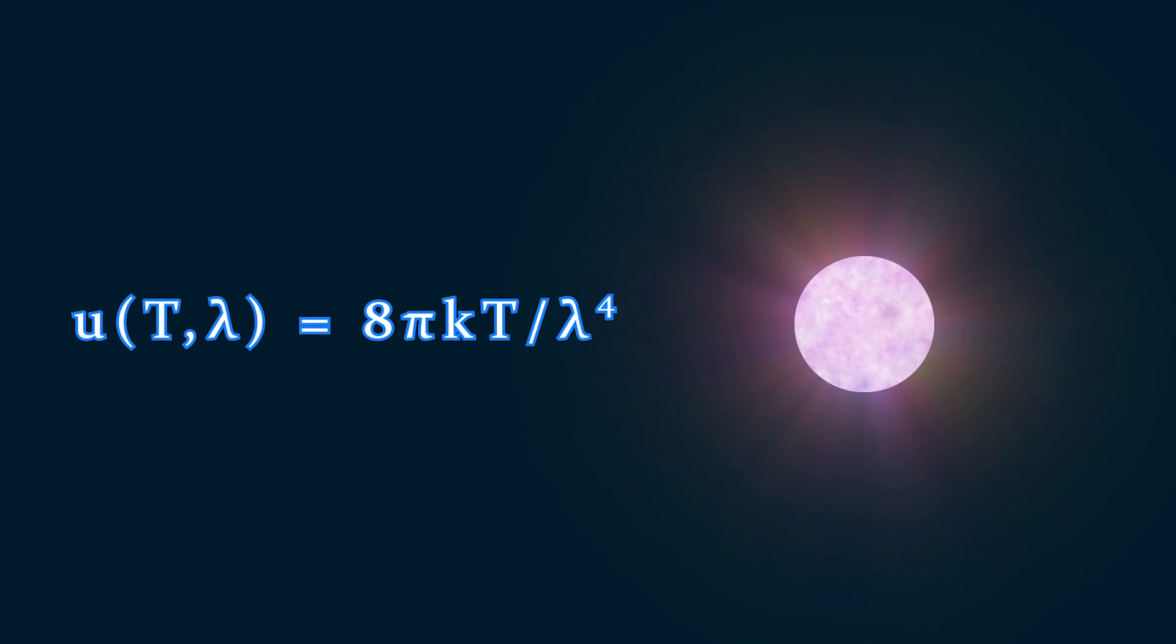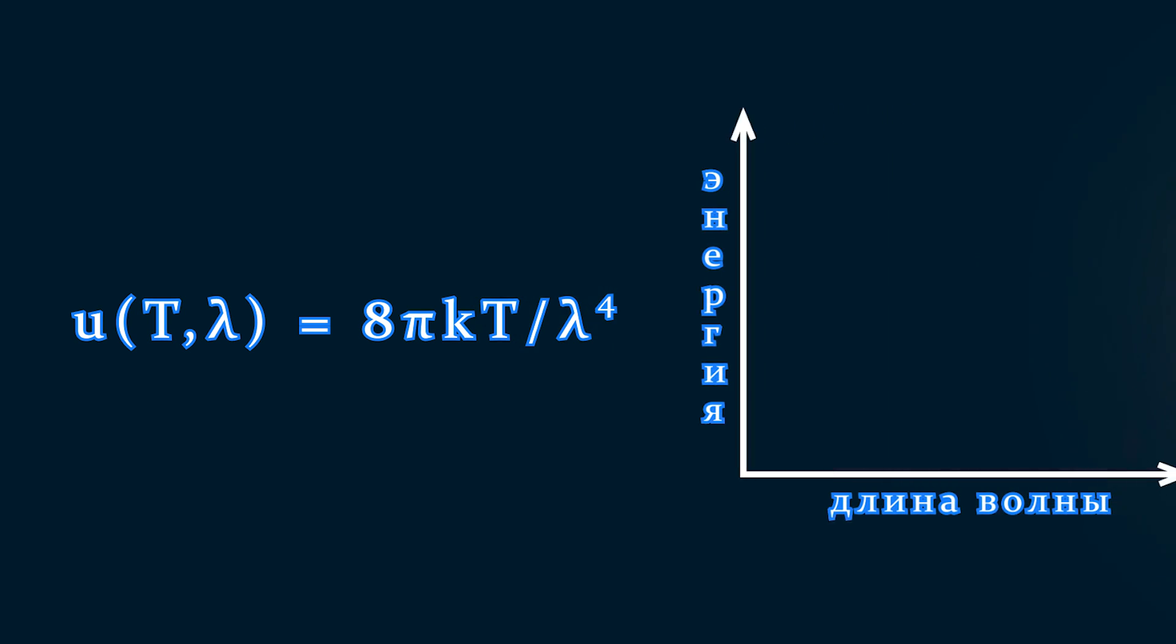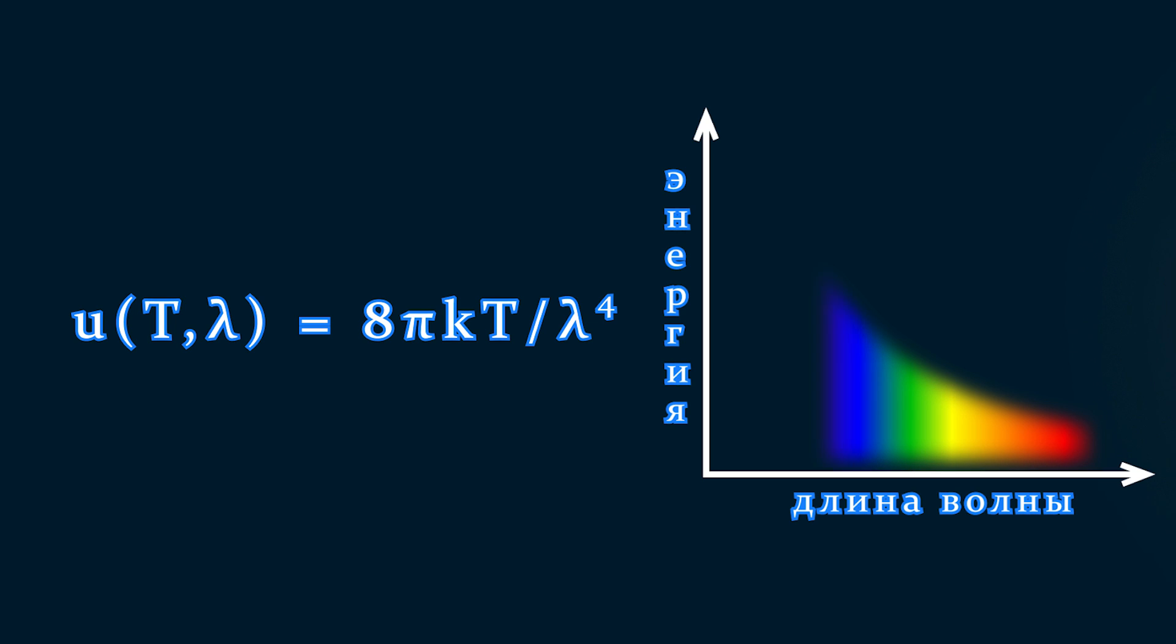The energy for each wavelength would be described by the Rayleigh-Jeans law. Unfortunately, this law, derived from the assumption that light is an electromagnetic wave, did not hold in practice. According to it, the energy density of radiation from a body at a given temperature should have grown indefinitely with increasing frequency. And moreover, if one attempted to obtain the total energy emitted by the body at all frequencies by integrating the expression over frequency from zero to infinity, an infinite value would be obtained. However, a body heated to a finite temperature should not emit infinite energy. This paradox became known as the ultraviolet catastrophe.